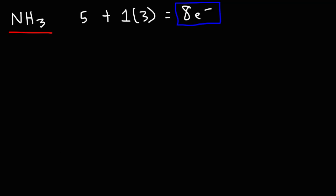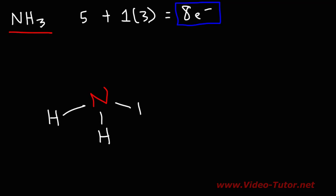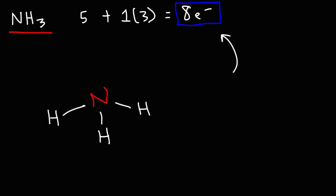Now, how can we draw the Lewis structure? Well, it's good to deal with hydrogen because hydrogen can only form a single bond. So we can simply connect nitrogen with the three hydrogen atoms through a single bond. Remember, every single bond represents two electrons. So far, we have two, four, six electrons. We need two more to get to eight, so we've got to add a lone pair to the central nitrogen atom. So that's the Lewis structure of NH3.